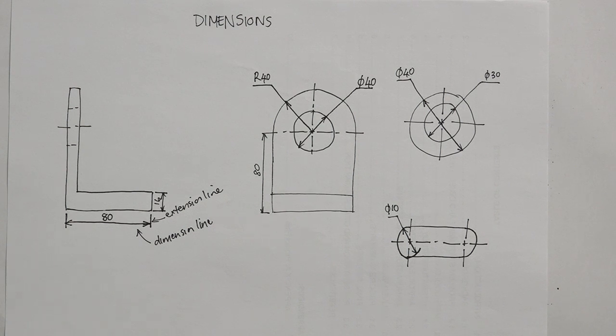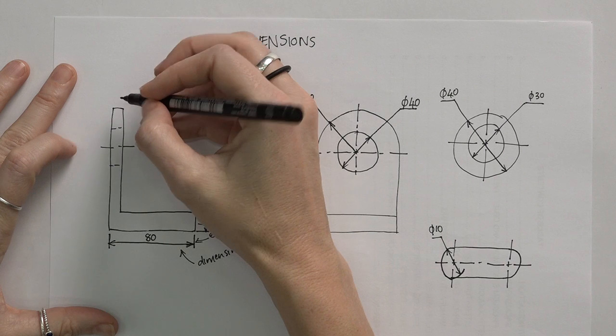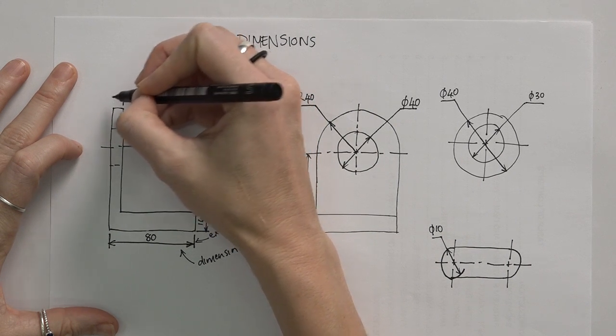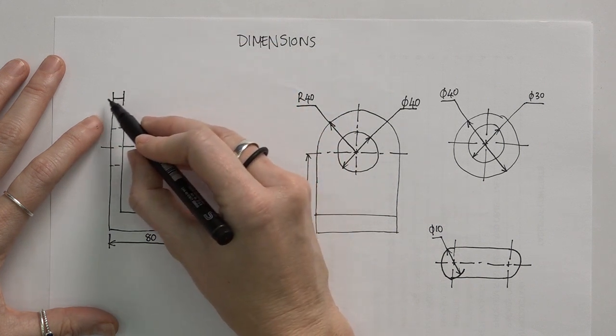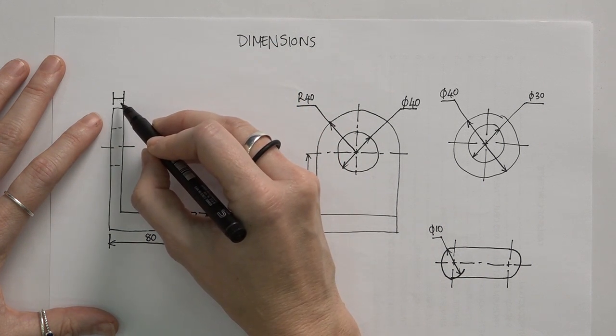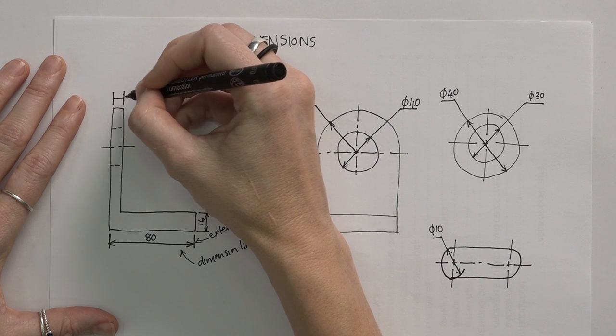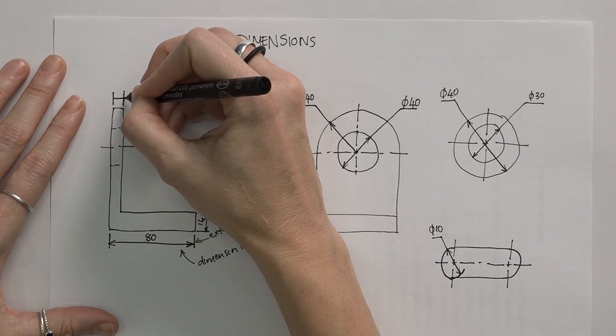There's another dimension line that we can use. If we have a very small component here and we want to do extension lines, this is almost not enough space to draw in our arrows and everything. So what we do is, we just draw a line in between there.